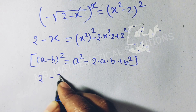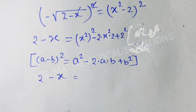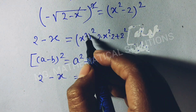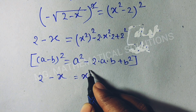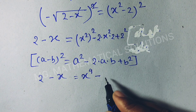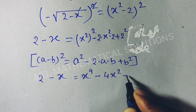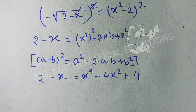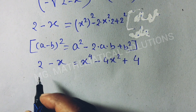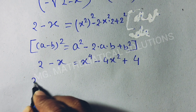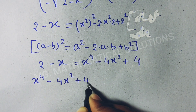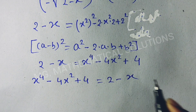So: 2 minus x equals x to the power 4 minus 4x squared plus 4. We rewrite this equation as: x to the power 4 minus 4x squared plus 4 equal to 2 minus x.